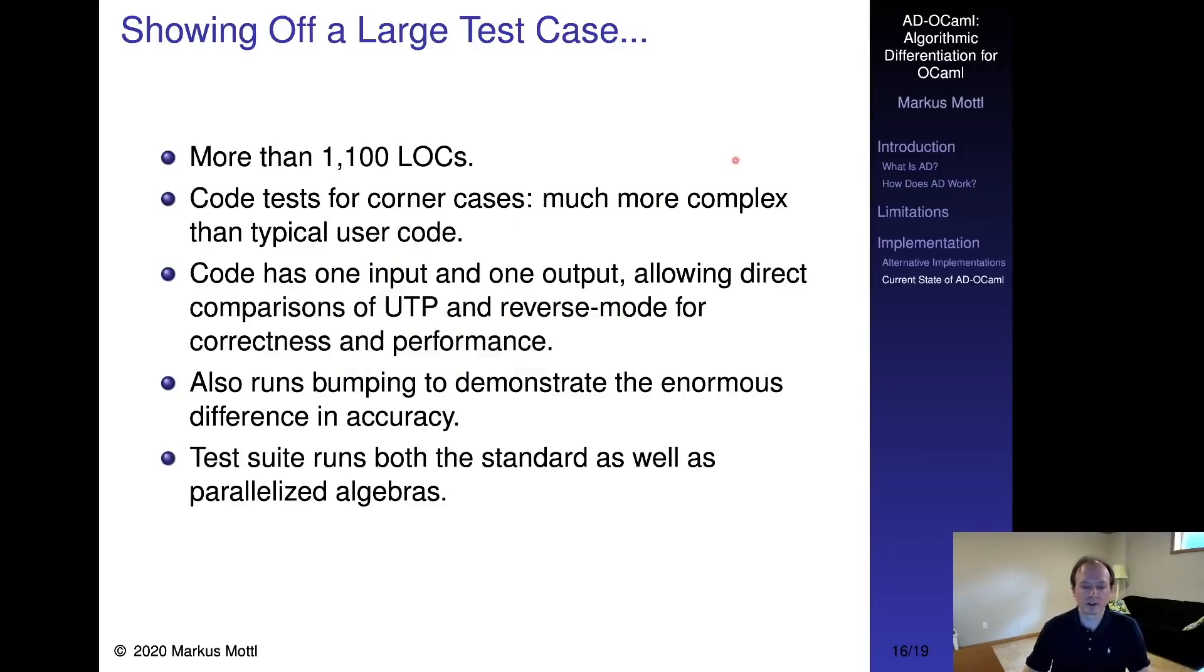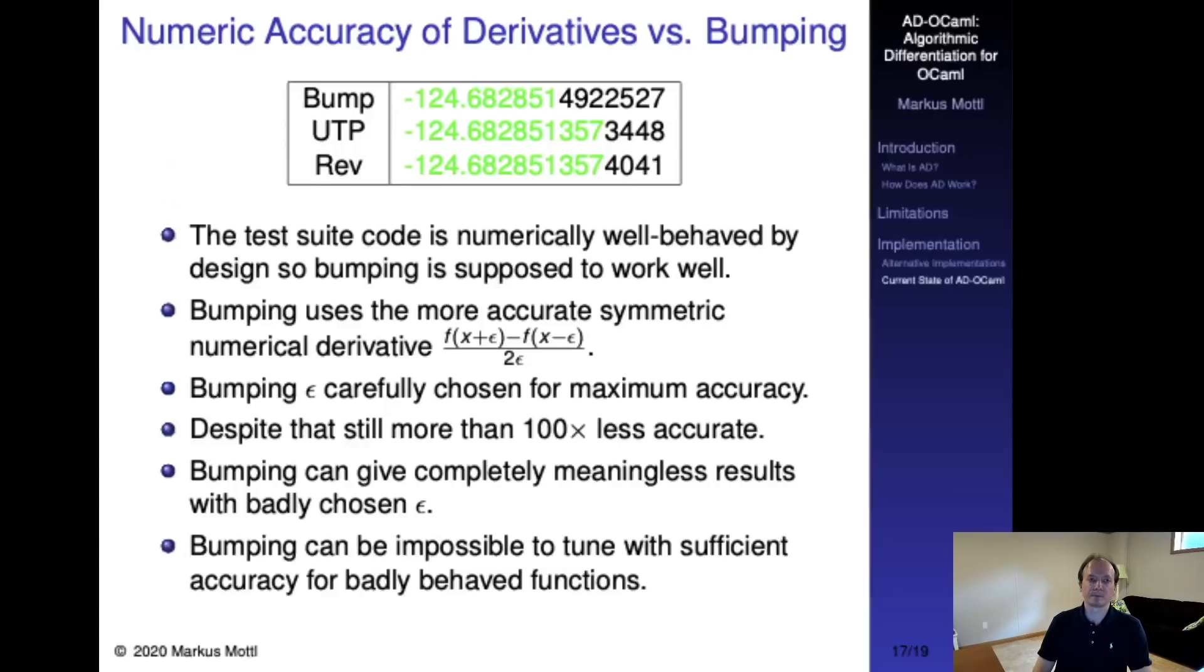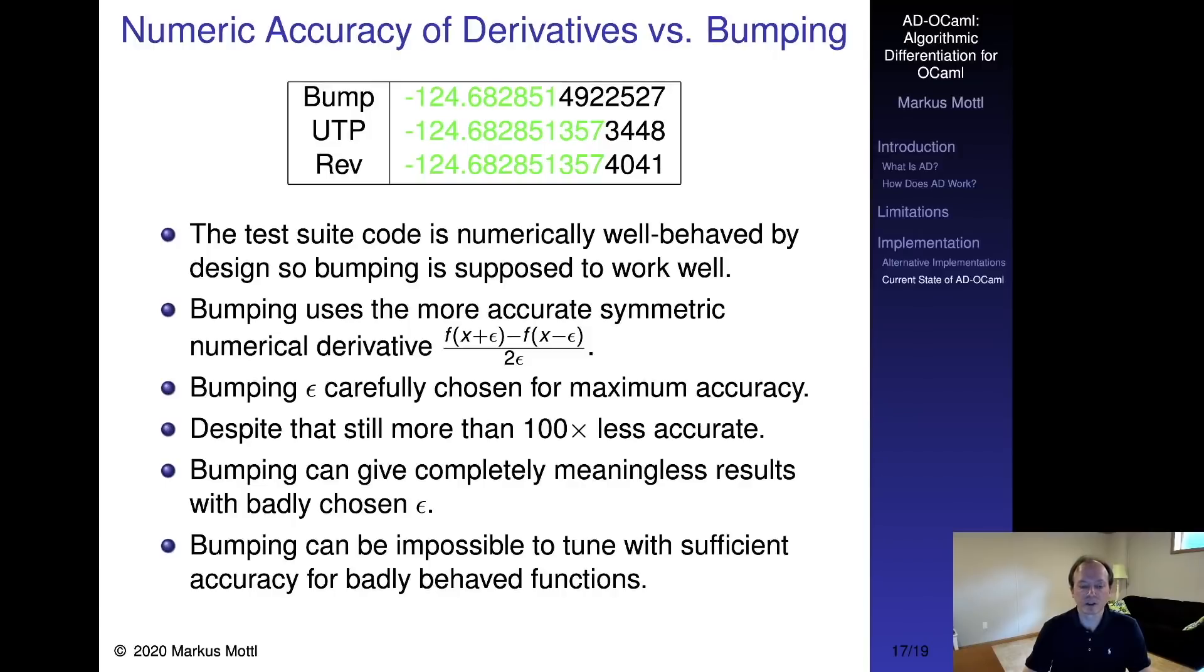Please note that this test suite was absolutely not written with benchmarking parallelism in mind. In fact, it deliberately creates a narrow and deep computational graph to improve detection of errors in reverse mode. This greatly reduces opportunities for parallelism. The parallel algebra nevertheless still finds ample opportunities for improving performance. The resulting derivatives of our program show that both UTP and reverse mode achieve greater accuracy than bumping. Note that the test suite was deliberately written to make bumping work well for verification. Bumping less well-behaved programs with less well-tuned epsilons can lead to meaningless results. It is sometimes impossible to obtain sufficient accuracy with bumping, even with tuning.